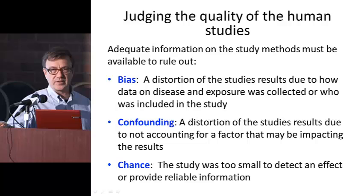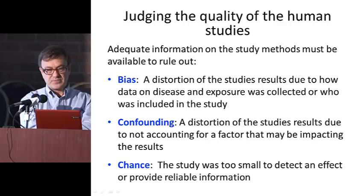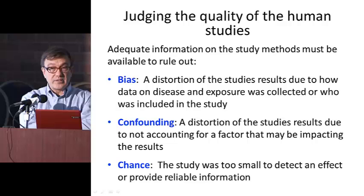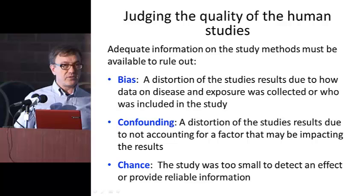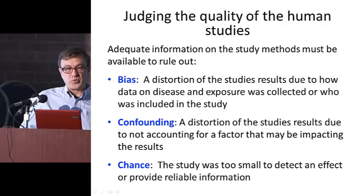I've tried to put a fairly common-language definition of bias here — basically a distortion of study results due to how data on either disease or exposure are collected, or who is actually recruited into a study. This is quite different from confounding, which is a distortion not due to how the study was conducted per se, but due to the fact that we didn't take into account something else that might be causing the effect.